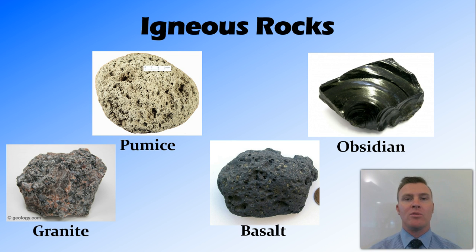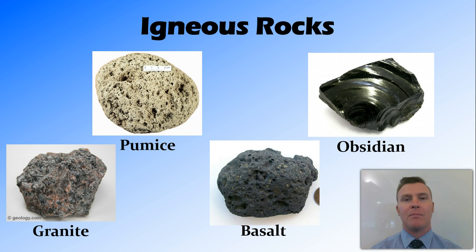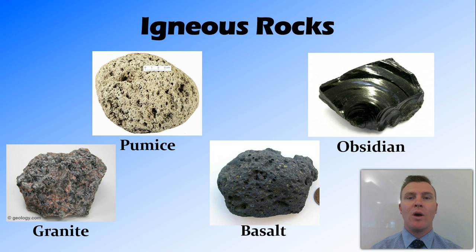Some examples of igneous rocks include pumice, basalt, obsidian and granite. The thing that matters here is the minerals that are in that molten rock when it cools, as well as how quickly that molten rock cools.